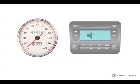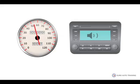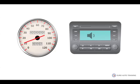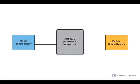A very simple example is when a vehicle's sound system automatically increases the volume as the vehicle's speed increases. It's been around for a while, but it's an example of where a system — in this case the sound system — makes use of information from another system. The sound system receives a vehicle speed signal, which is initially provided by a wheel speed sensor used on the ABS system.